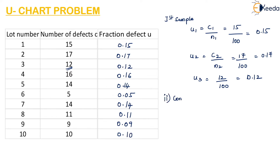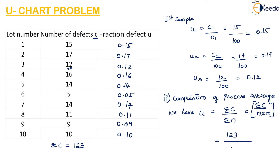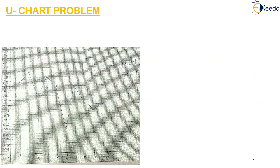Now the computation of the process average: U-bar equals sigma of C divided by sigma of n, which is sigma C divided by n times m. When you add up all 10 number of defectives, we get 123. So 123 divided by 100 times 10 — the lot size is 10 — giving us 0.123. So the process average U-bar is 0.123.